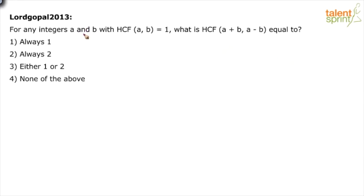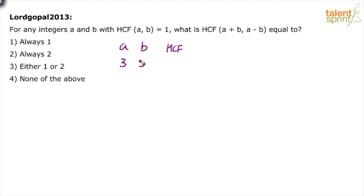For integers a and b, the HCF is 1. What is the HCF of (a+b) and (a-b)? When is the HCF 1? There are infinite cases, but usually when there are two prime numbers the HCF is 1. So let us assume a and b — for example, 3 and 5 — where HCF is 1.